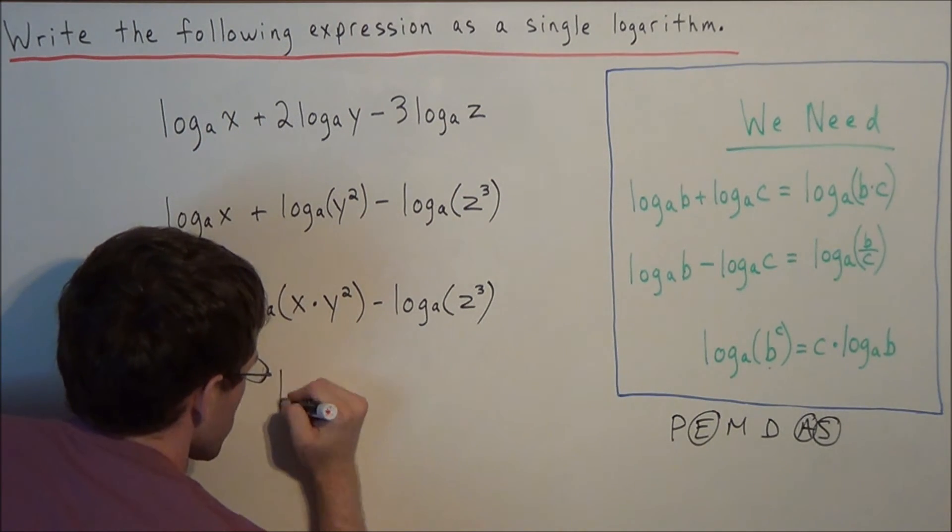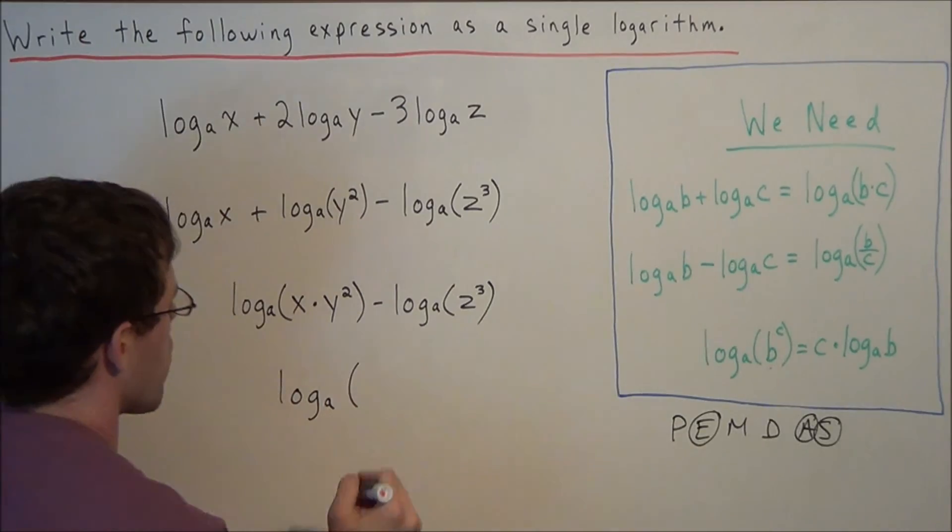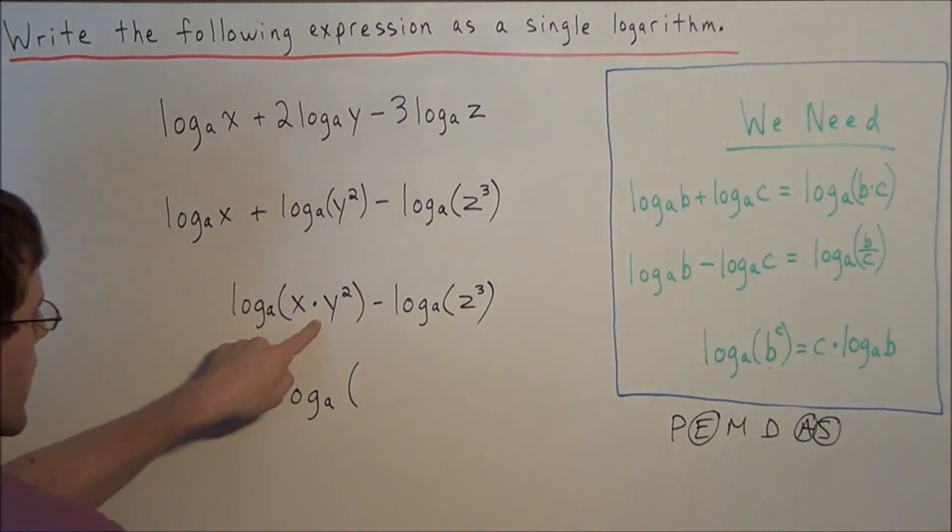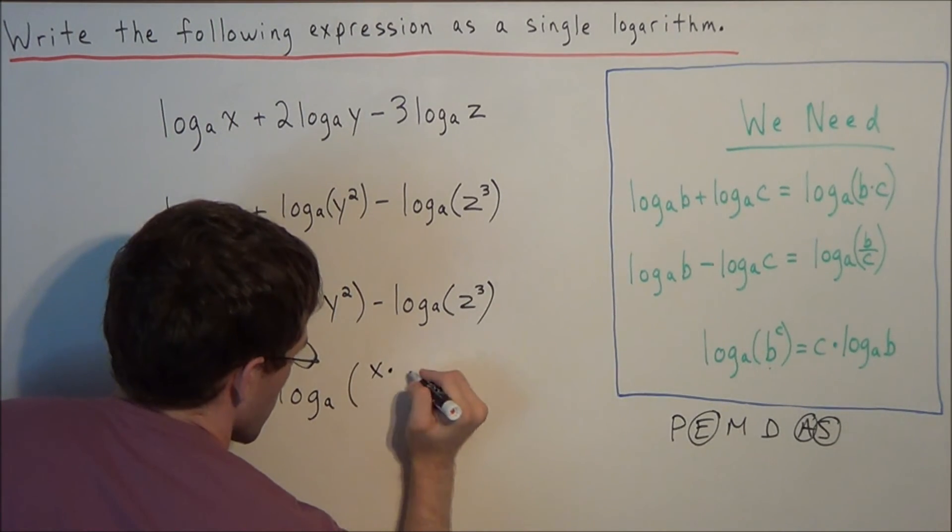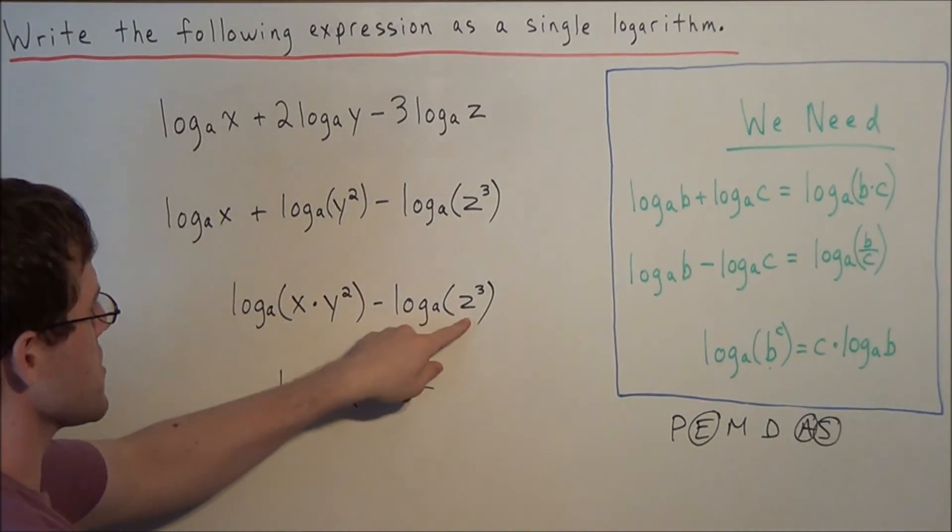So we can combine this into a single log expression now as log base a, and now our fraction has a numerator of x times y squared, and the denominator is z to the third.